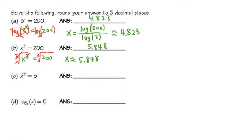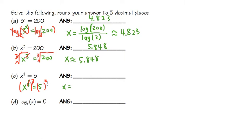Next, we have x to the one-third power equal to 5. The x is in the base and the power is one third. What we do is raise both sides to the third power — since 3 times one third equals 1, they cancel out. So x equals 5 to the third power, which is 5 times 5 times 5, and that gives us 125.